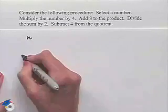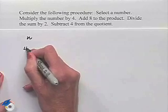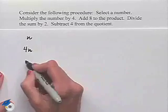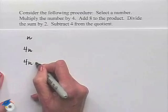Let's multiply that number by 4. And I'll write that down underneath it. So we end up with 4 times n. Let's add 8 to that product. So we'll have 4 times n plus 8.